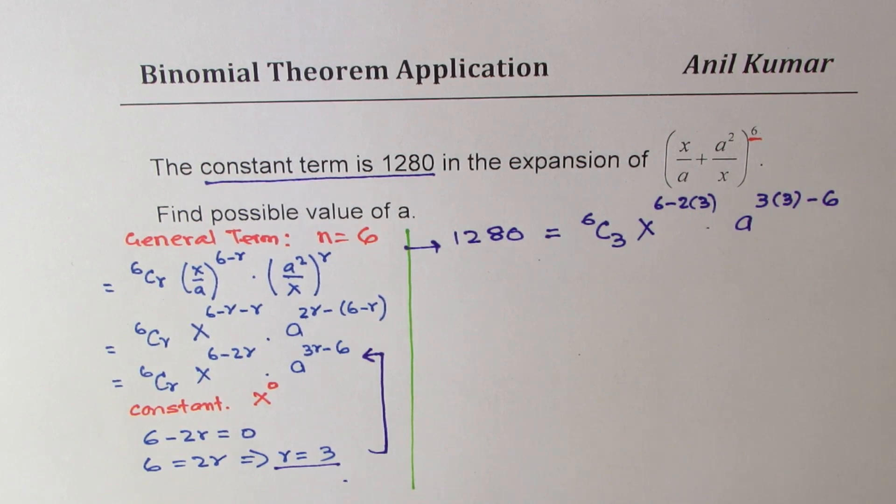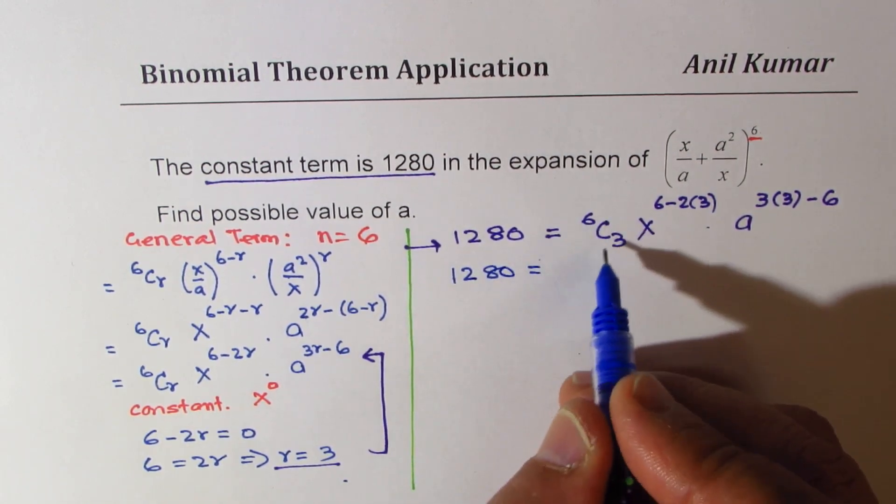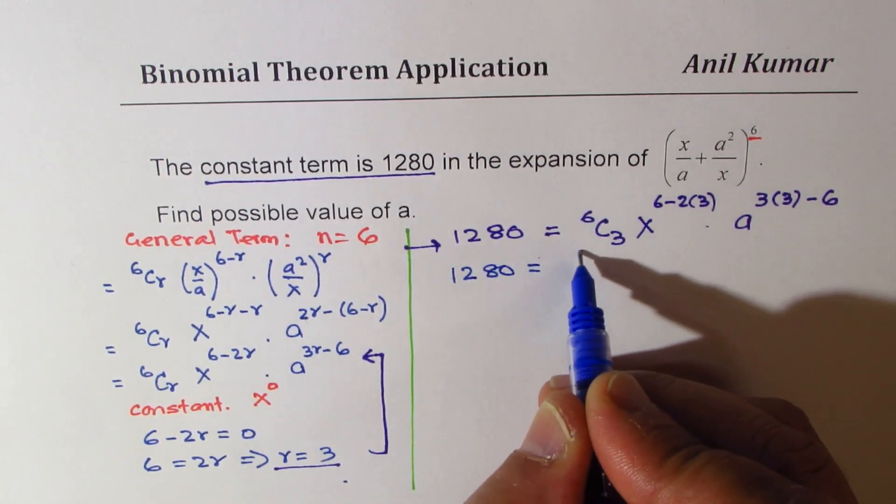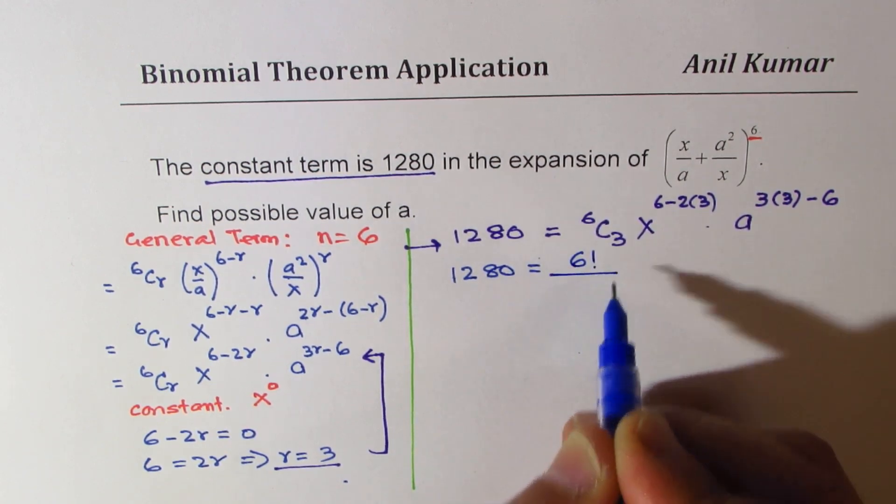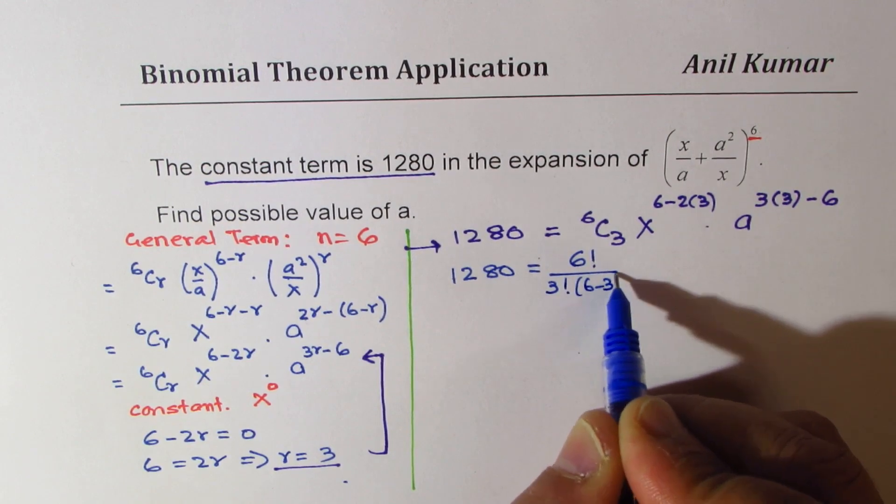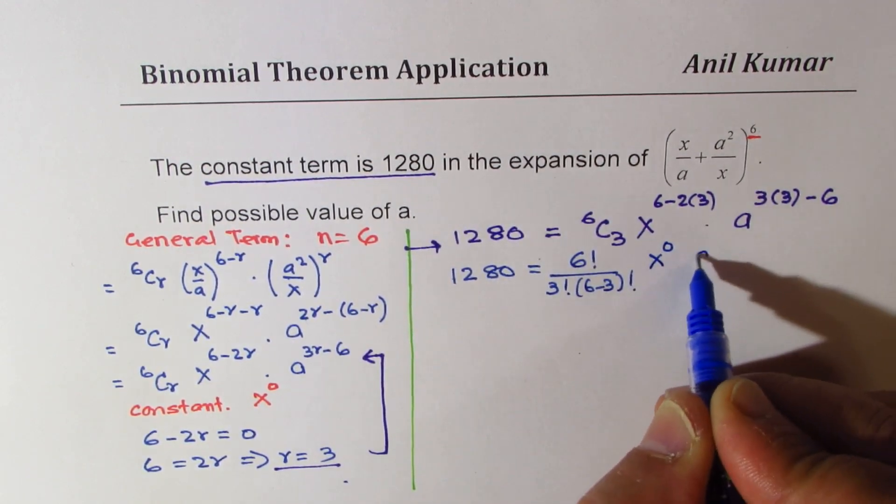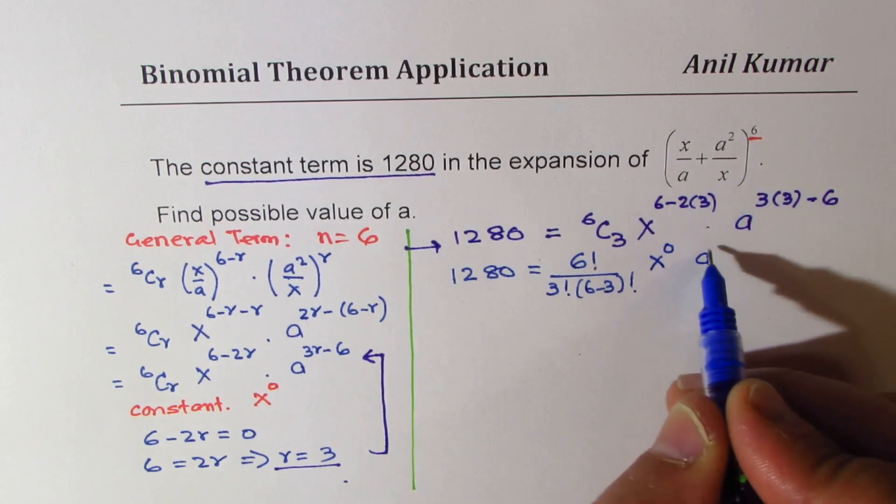So now we can calculate a, since we know this is 1280 equals 6C3 is 20, but let me go with the expansion, 6 factorial over 3 factorial times (6-3) factorial. Here we get x^0, a^(9-6) which is 3.